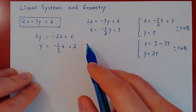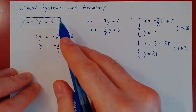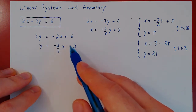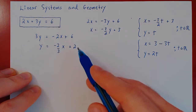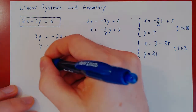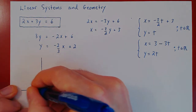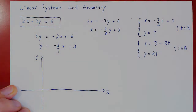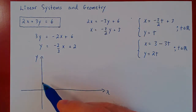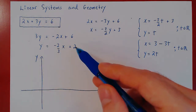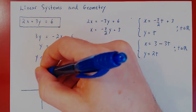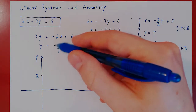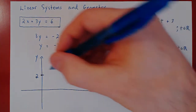This equation is equivalent to the original linear equation, and it should look more familiar. y equals a multiple of x plus 2 — this is the equation of a line in the xy plane. We have our x-axis and y-axis. The y-intercept when x is 0 gives y equals positive 2. The slope is negative 2 thirds, so it's a negative slope and the line is decreasing.